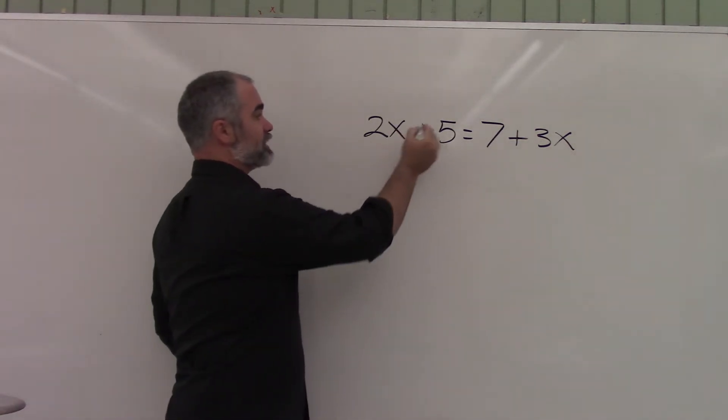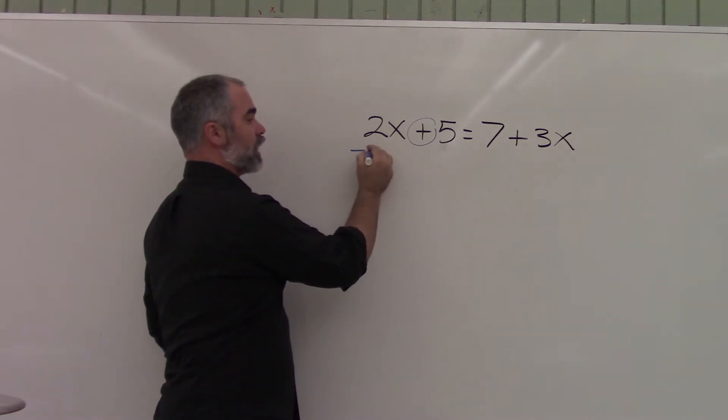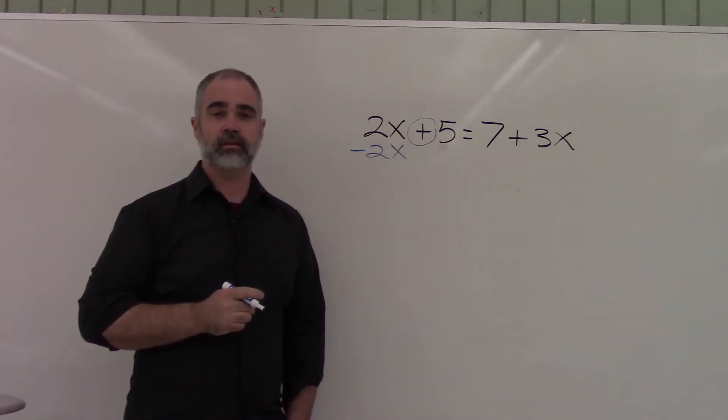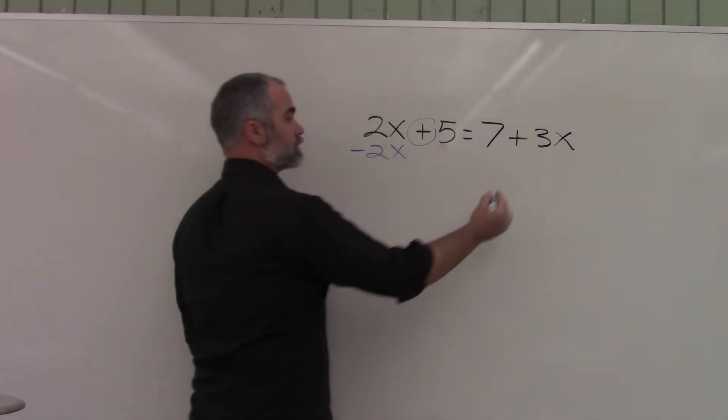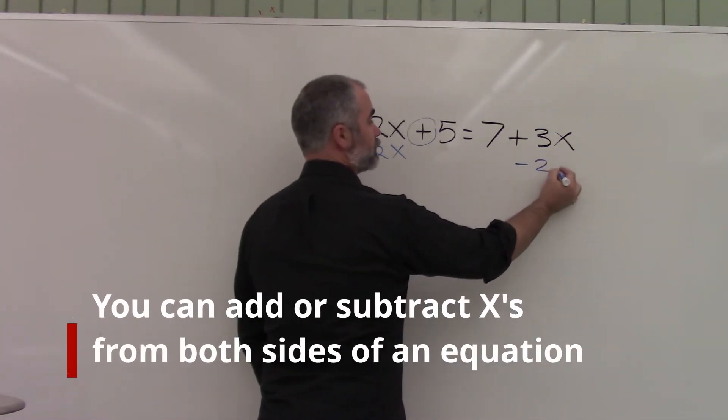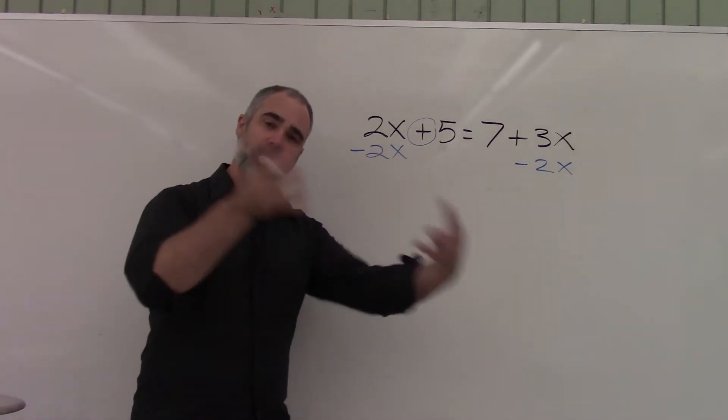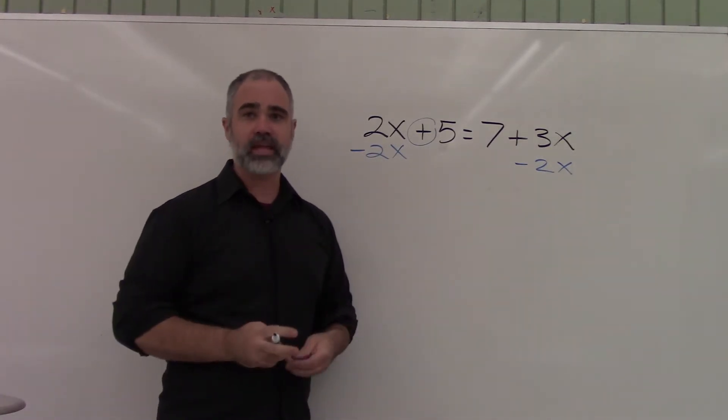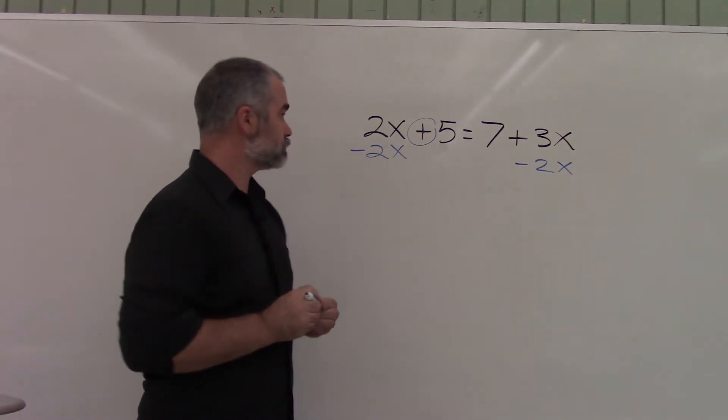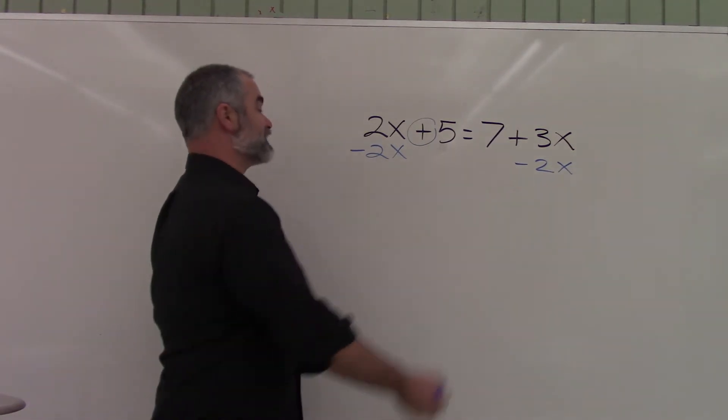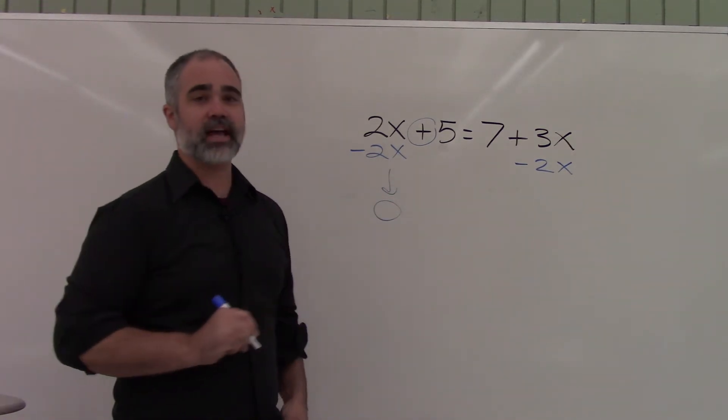I can take the 2x. It's being added. I'm going to do the opposite of adding 2x. And I'm going to subtract 2x from both sides. Notice over here, I have to think about combining like terms. X's go with x's. Numbers go with numbers. That rule is still true. So 2x minus 2x. That's a 0. Okay, cancels out.